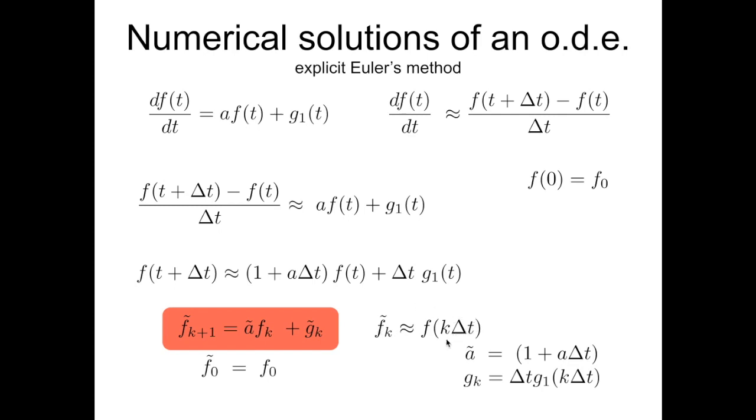Delta t might be chosen in the right way, small enough, but will never be infinitesimal, because otherwise this is not going to be something that computers can process, can be performing.